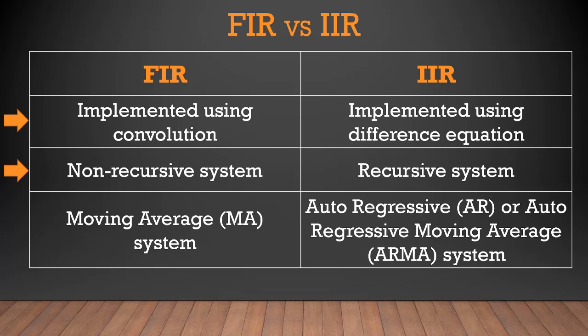Since FIR filter is an all-zero filter and only contains numerator in the transfer function, in the difference equation there are only delayed terms of the input. Due to this reason, FIR filter is a non-recursive system, so there is no feedback or delayed samples of the output in case of FIR filter. Whereas in case of IIR filter, because the transfer function can contain both numerator and denominator or only denominator, in the difference equation of IIR filter there are always at least one delayed sample of the output. Therefore, IIR filter is always a recursive system and it contains feedback. This property is also related with the stability of IIR filter, because in case of IIR filter there is feedback, so there is a question of stability.